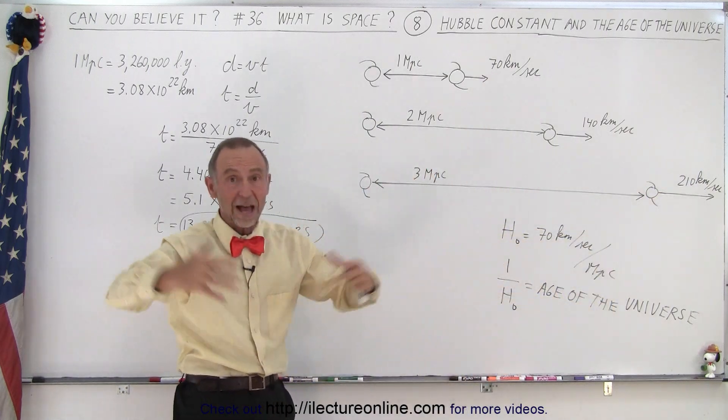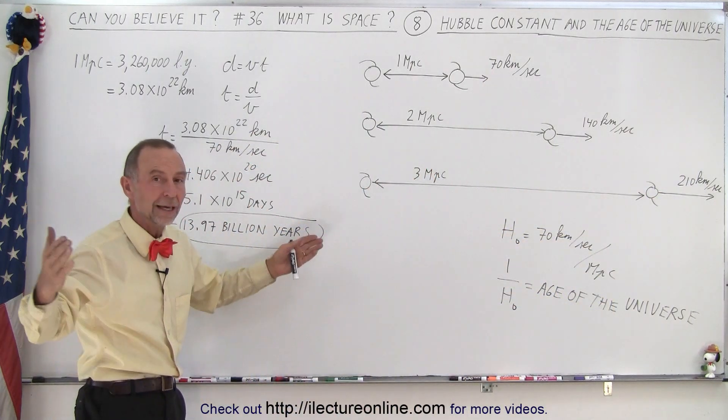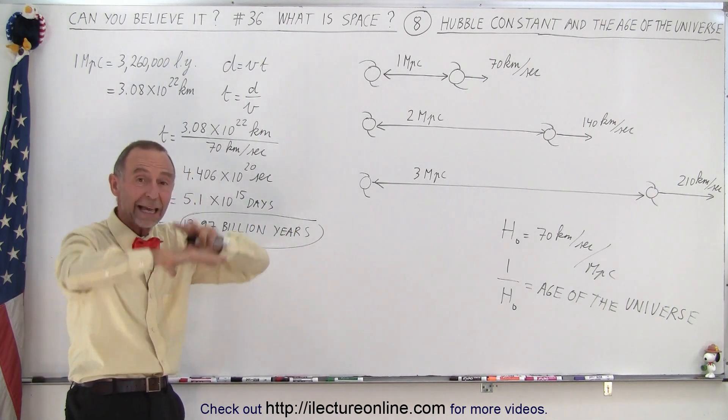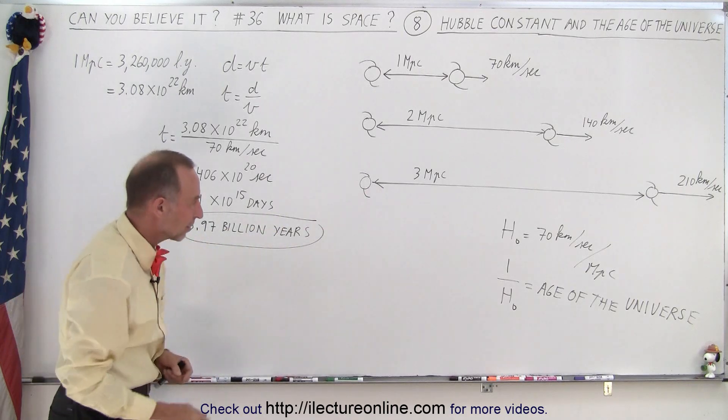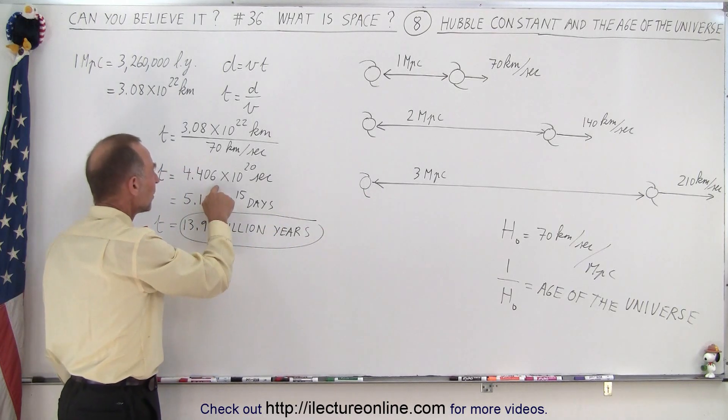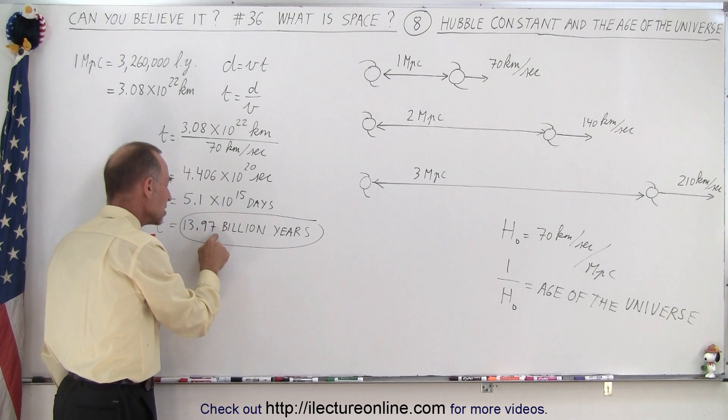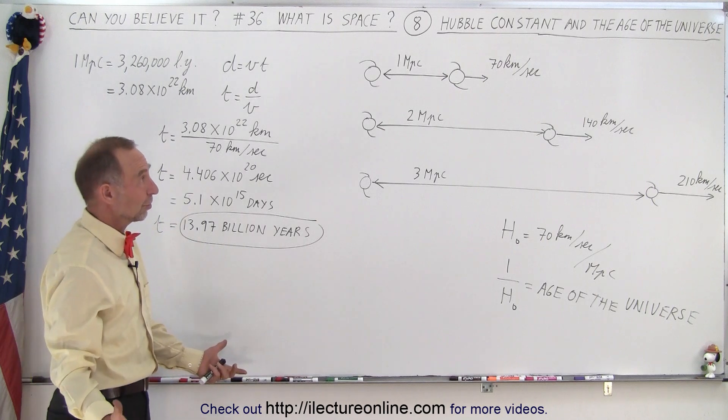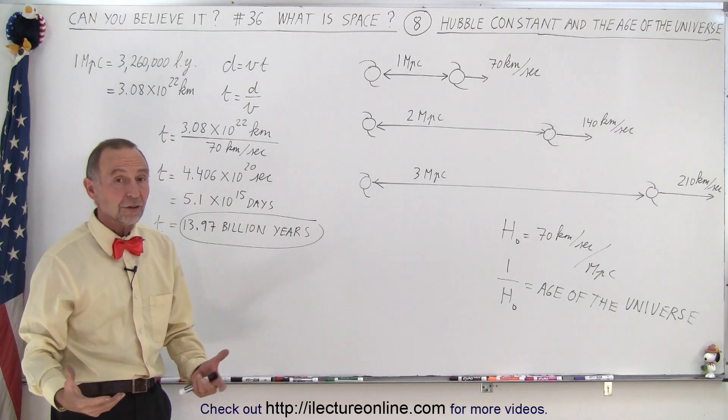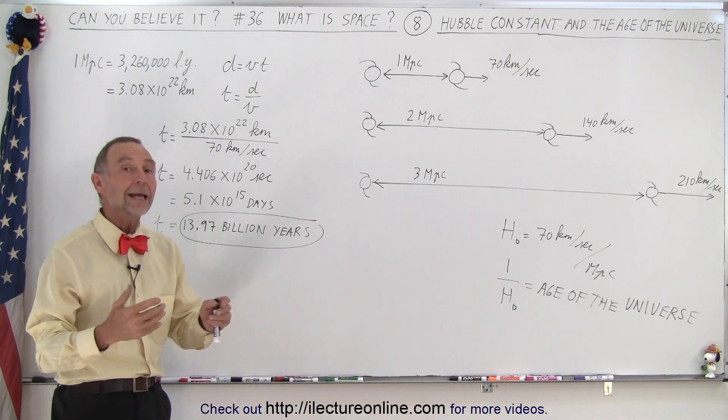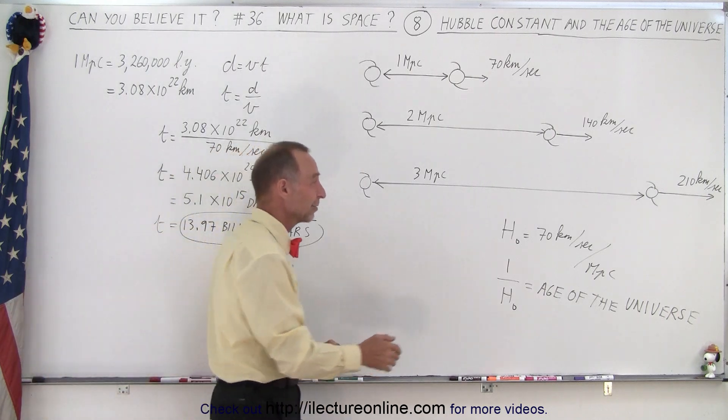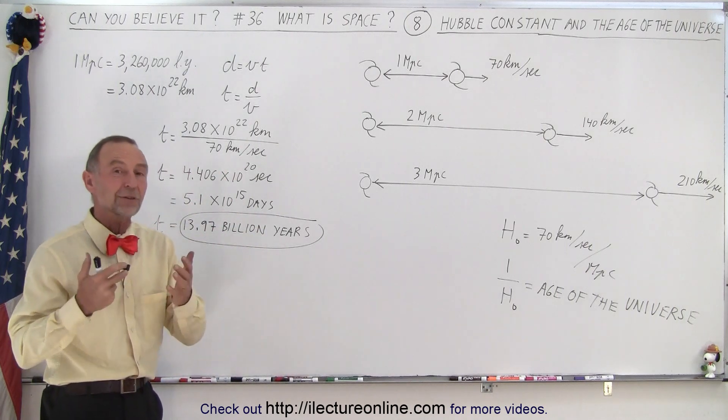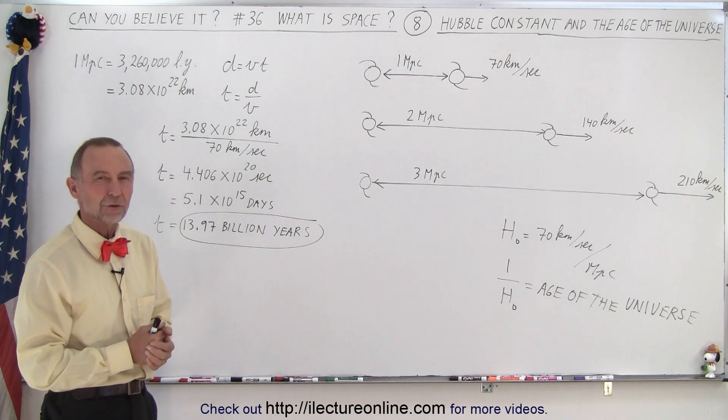Two galaxies that are a thousand megaparsec away from each other, same thing. It took them that long to get to that position, because space in between is expanding everywhere in the universe at the same rate. So this many seconds is this many days is this many years. A little less than 14 billion years. And so the conclusion is now that the universe is roughly about 13.8 billion years old, because the latest numbers they came out with for the Hubble constant is around 72 kilometers per second. And therefore the universe is about 13.8 billion years old.